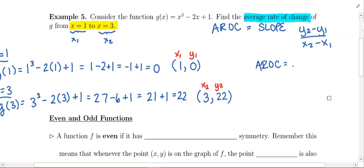Average rate of change, we need to do y2 minus y1 in the numerator. Look how I've got my points labeled. Y2 is going to be 22 and y1 is going to be 0. So that's going to be 22 minus 0 in the numerator. The denominator is x2 minus x1. I've got my coordinates labeled here, so this is going to be 3 minus 1.